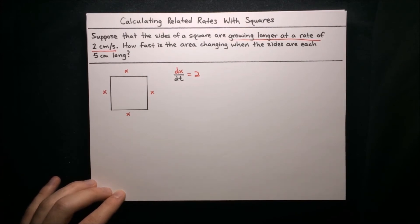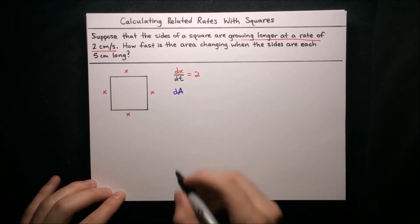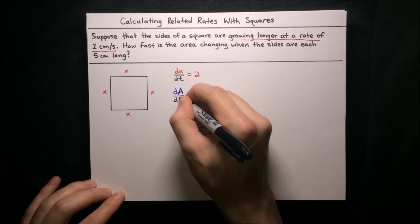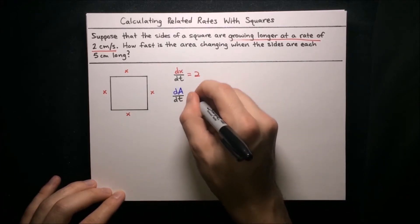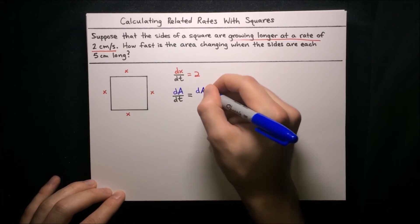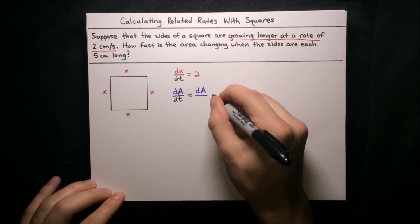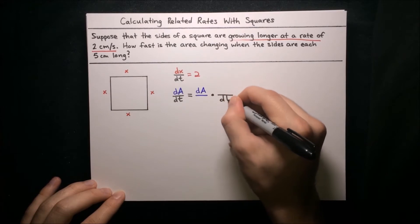That's all the information we're given in the problem. What we want to find is how fast the area is changing when the sides are each 5 centimeters long — that is, we want to find dA/dt, the rate of change of the area with respect to time, when the sides are each 5 centimeters long. Let's just focus on finding some expression for dA/dt. The way we're going to do this is pull apart this derivative: dA/dt can be expressed as dA over something times something over dt.